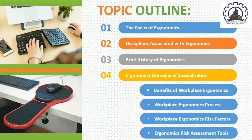Today I will be highlighting four key areas as our topic outline. First is the focus of ergonomics. Second is the disciplines associated with ergonomics. Third is the brief history of ergonomics. And lastly, the ergonomics domains of specialization.